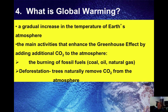Deforestation also contributes. Trees naturally remove carbon dioxide from the atmosphere through photosynthesis — they take in carbon dioxide and put out oxygen. If you keep cutting down more and more trees and removing forests, you are removing something that naturally reduces extra carbon dioxide from the atmosphere.